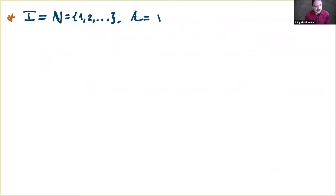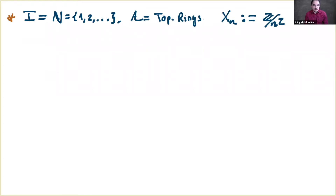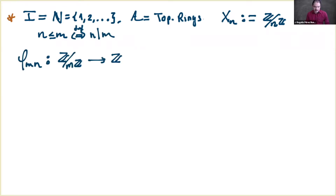For more concrete examples, we take the natural numbers starting at one as the index set, and consider the category of topological rings. We choose the family of topological rings ℤ/nℤ — a very number-theoretic example — with the discrete topology. We can prove that the ring operations are continuous with the discrete topology.